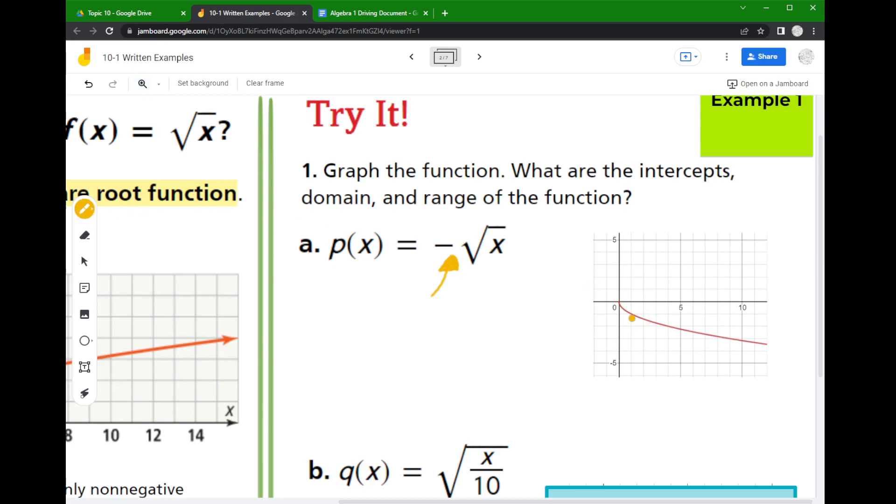So I look for some of my anchor points so that I could discuss them. So the first thing is that the x and y intercepts are both 0. Flipping the graph upside down did not change the intercepts.